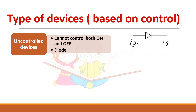Next is the classification of devices based on control — that is, whether you can control the turn-on and turn-off process. The first type is the uncontrolled device. As the name suggests, you cannot control both the on and off process. Example: diode. During the positive half cycle the diode is forward biased and turns on automatically; during the negative half cycle it is reverse biased and turns off automatically. So you are not able to control the on and off process — that is called an uncontrolled device.